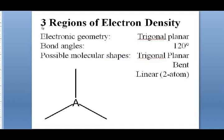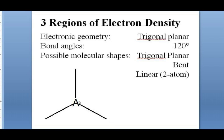With three regions of electron density, the farthest apart they can get is by arranging in an equilateral triangle — 120 degrees apart. This electronic geometry is called trigonal planar; bond angles are 120 degrees. If all three positions have atoms, the molecular shape is also trigonal planar. If one position is a lone pair, we have three atoms defining the geometry and the shape is bent.